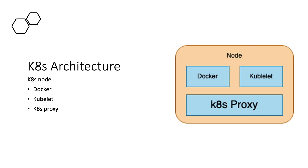The worker node has the same components but in a simpler form. The Docker container runtime is initiated within the worker node. Every node must have the kubelet installed, and we also have the Kubernetes proxy, which is an API able to communicate with the API server on the master node. In the next video, we'll be discussing how to set up Kubernetes locally and how to initiate a local structure and deploy an application to Kubernetes.